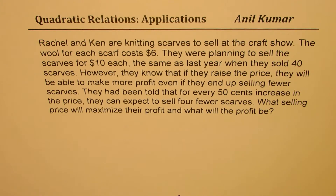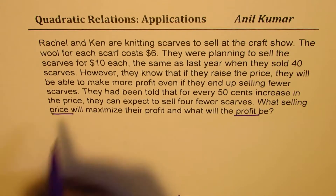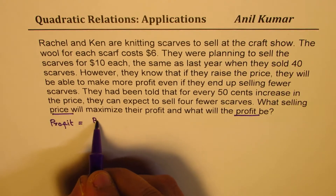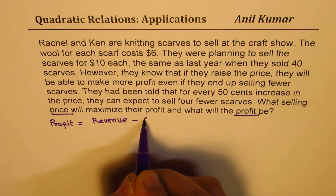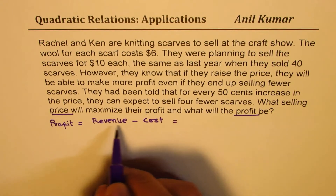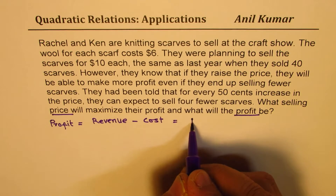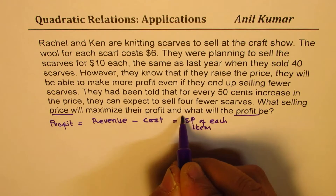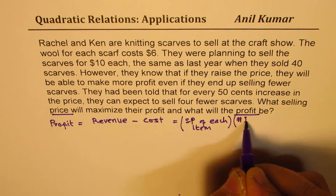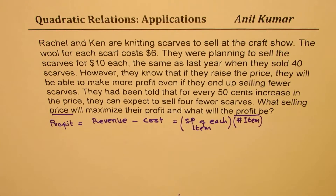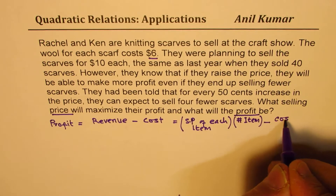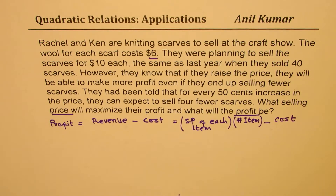Let's try to understand and solve. We are working on profit, so we need to find both the profit and the price. Profit is basically equal to revenue minus cost. Revenue is the selling price of each item times the number of items. And cost is given as $6 per item, so cost is $6 times the number of items. Let me write the cost here first — that is the basic relation we need to work with.